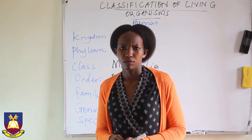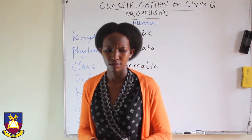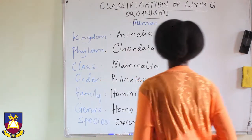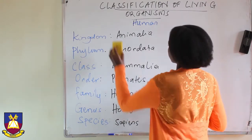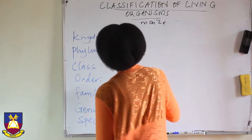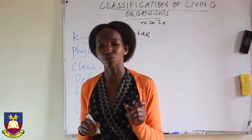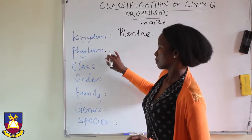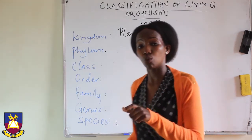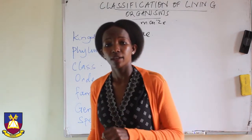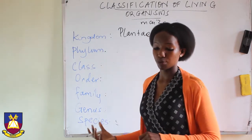Now we can try with maize, because it gives us corn. Maize is a plant — it belongs to kingdom Plantae. It is important to note that all levels — kingdom, phylum, class, order, genus — start with a capital letter. It is only the species name that does not start with a capital letter.